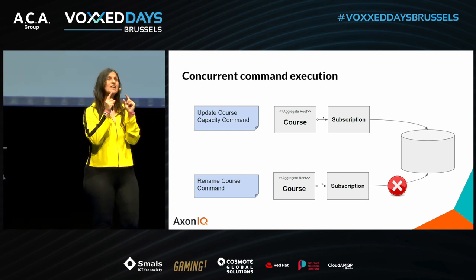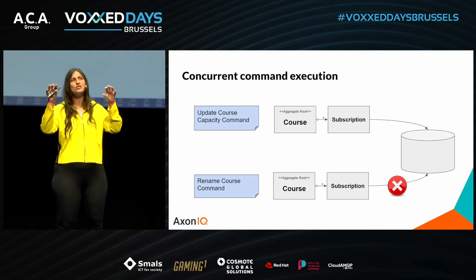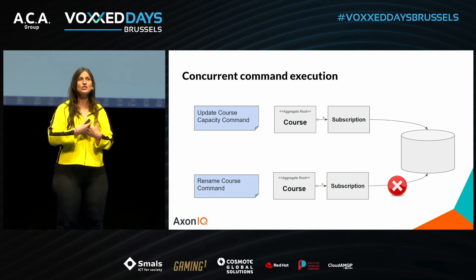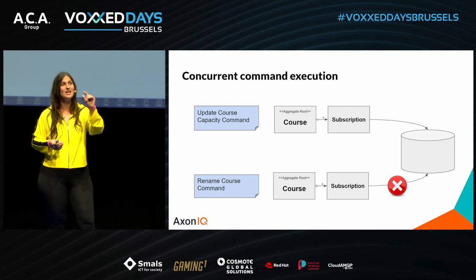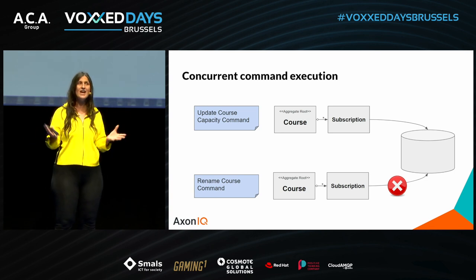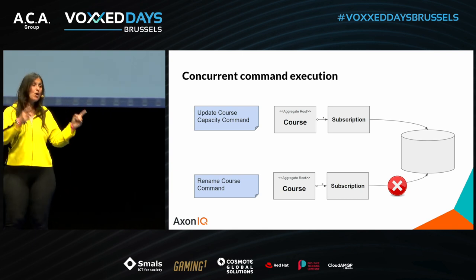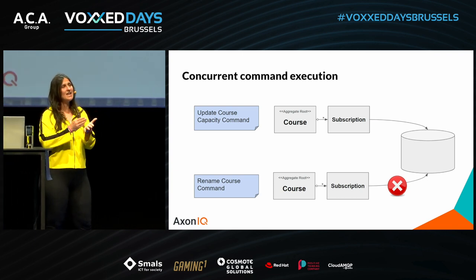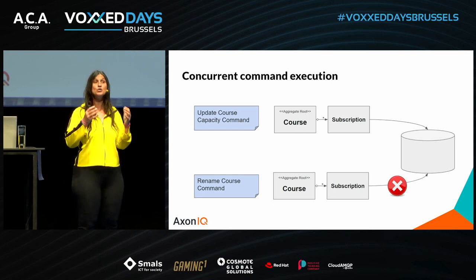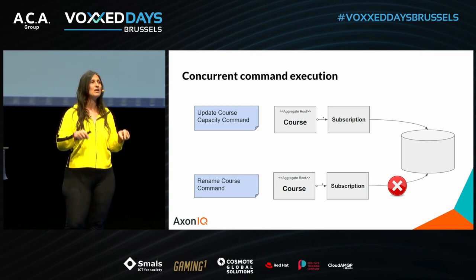While the first transaction will be accepted, the second one will necessarily be rejected. It doesn't matter that the two operations do not influence each other — that changing the course name and changing its capacity will not interfere in any way. The only fact that they belong to the same aggregate prevents concurrent execution. Assigning both commands to the same aggregate increases contention unnecessarily, forcing them to execute sequentially.